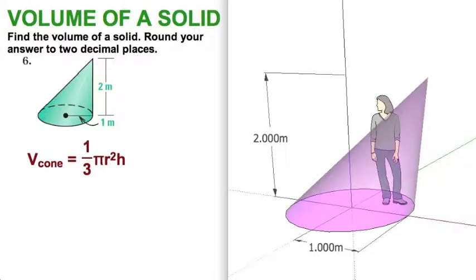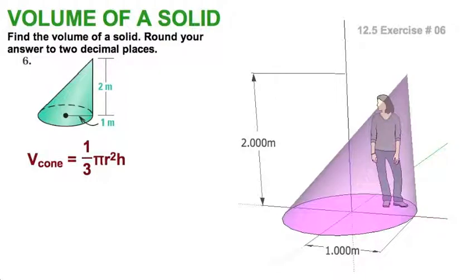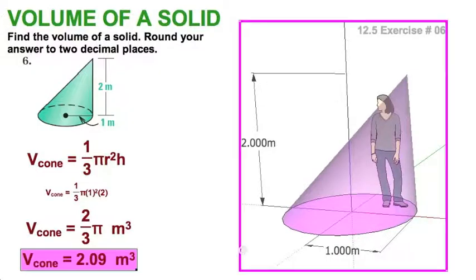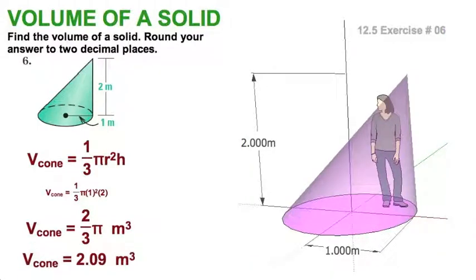So, let's do the math. Substitution. Put in 2 for the height, 1 for the radius. Pretty straightforward. Looks like two-thirds pi. Well, two-thirds pi. Just two divided by three. And keep all those digits in your calculator. Times the pi key. And you should come up with about two and nine hundredths. And that would be cubic meters.